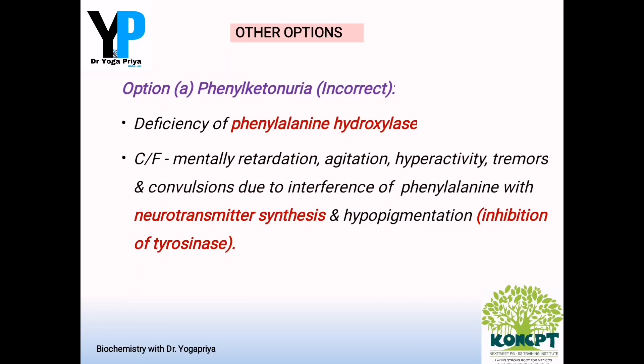To rule out other options: Option A is phenylketonuria, which is mainly due to deficiency of phenylalanine hydroxylase. Clinical manifestations include central nervous system features like mental retardation, agitation, hyperactivity, tremors and convulsions, mainly due to interference of phenylalanine with neurotransmitter synthesis. Hypopigmentation is seen here due to inhibition of the enzyme tyrosinase. Mental retardation is not seen in alkaptonuria, and there will be pigmentation in alkaptonuria — that is how Option A is excluded.